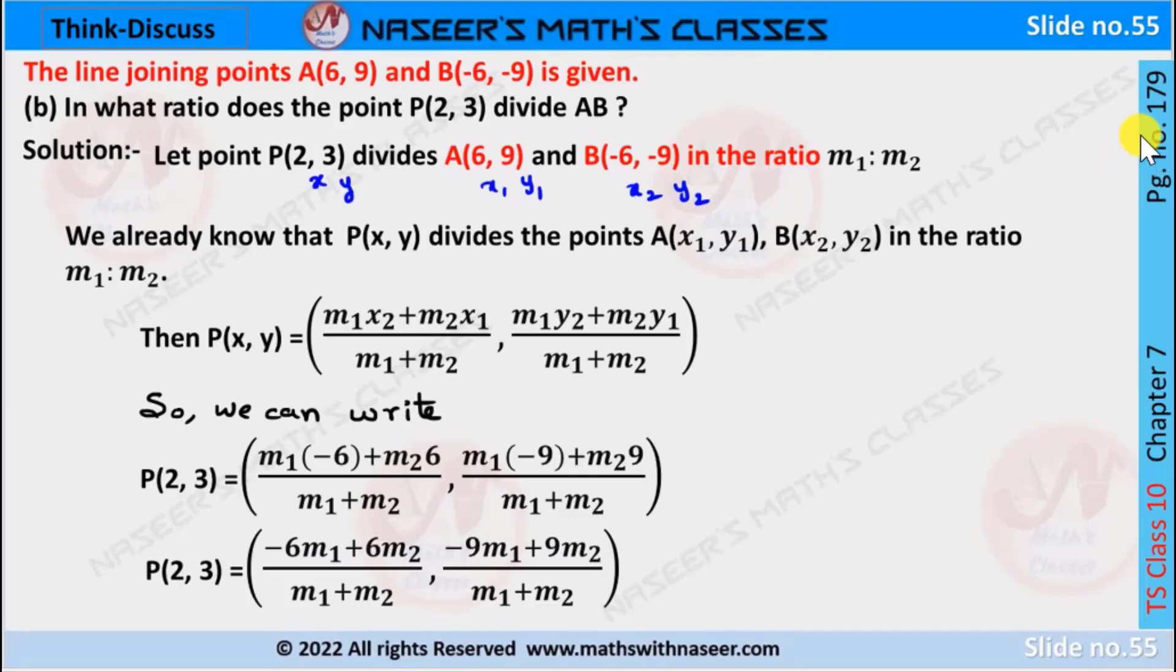Think and discuss page number 179, chapter 7 coordinate geometry. The line joining points A(6,9) and B(-6,-9) is given. In what ratio does the point P(2,3) divide AB? Let point P(2,3) divide A(6,9) and B(-6,-9) in the ratio m1 is to m2.